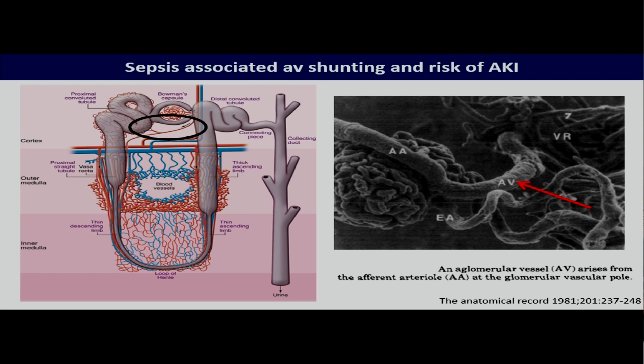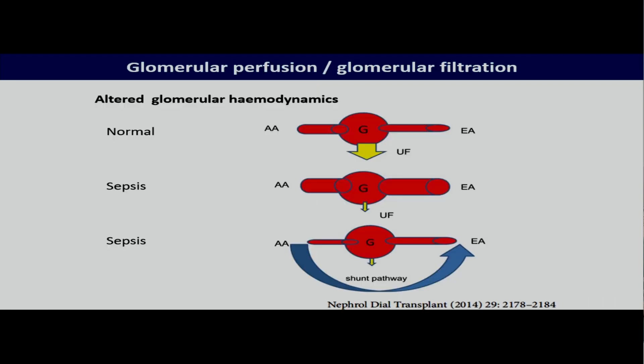And there's evidence that this happens, which is now more than 40 years old. So if this obviously happens, then glomerular filtration may be completely bypassed and may cease.